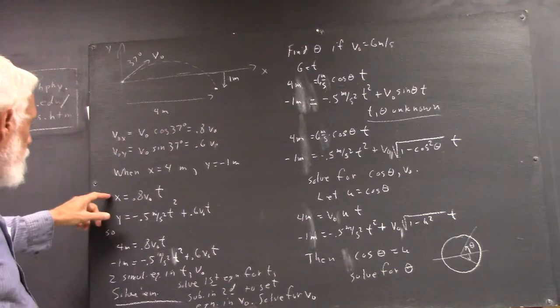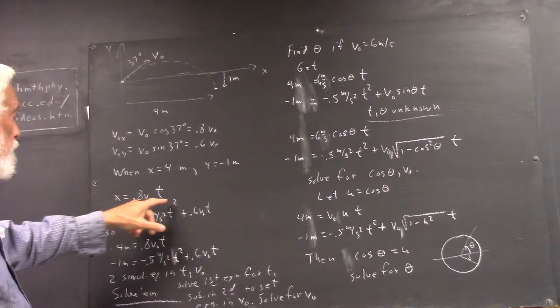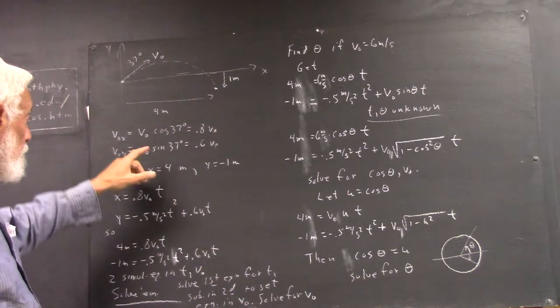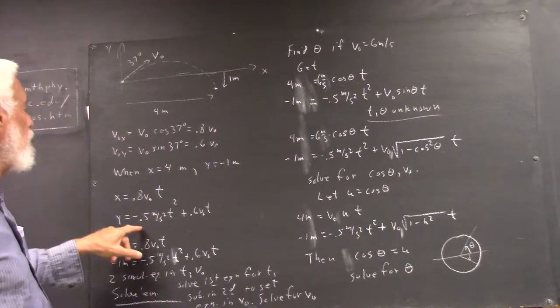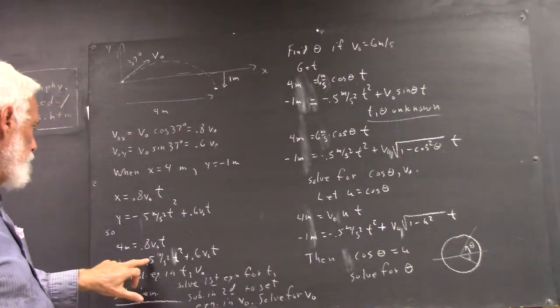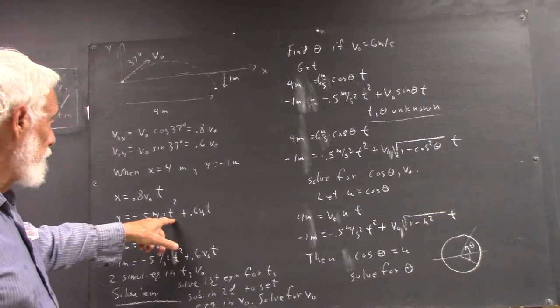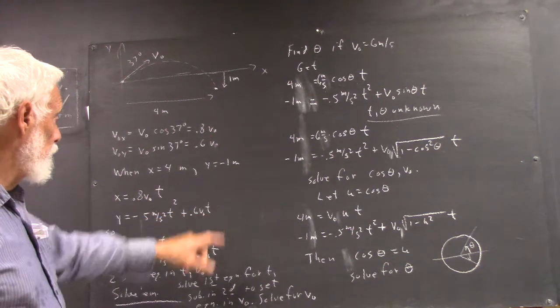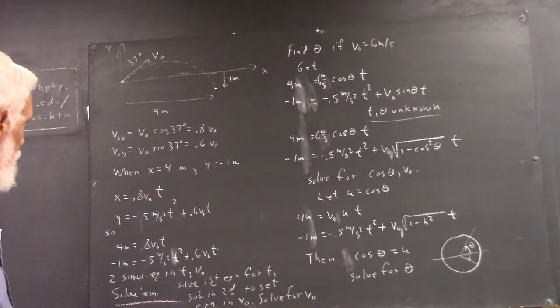Then, our functions, our equations for x will be 0.8v₀t, in other words, our v₀x times t, and y will be negative one-half at squared, negative five meters per second squared, not 0.5 meters per second squared, times t squared, plus 0.6v₀t, initial y velocity times t.